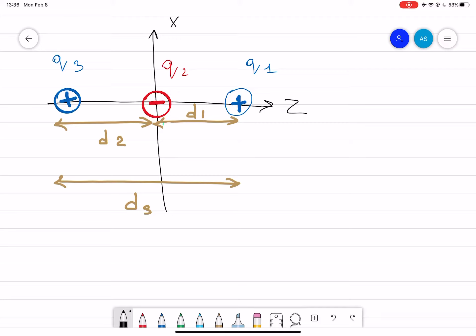The total potential energy will be due to the interaction between all these charges. What is the potential energy first of all between q1 and q2? That will be u12 equal to k q1 q2 divided by d1. Keep in mind there's no modulus.